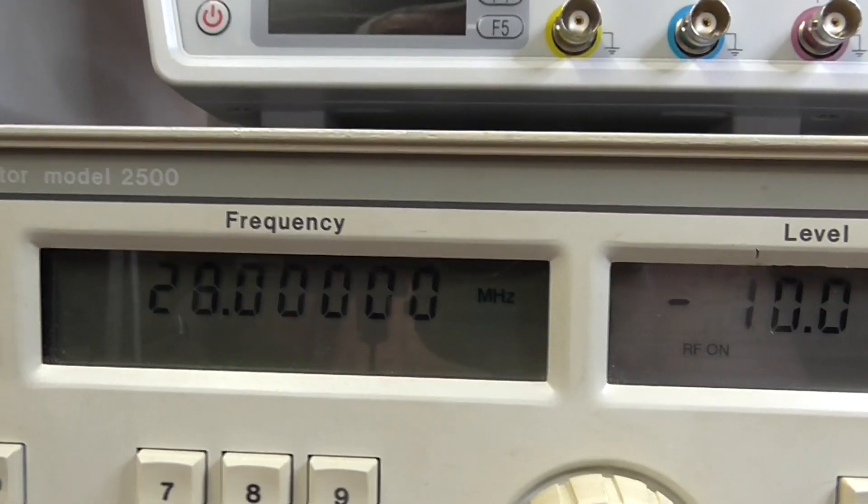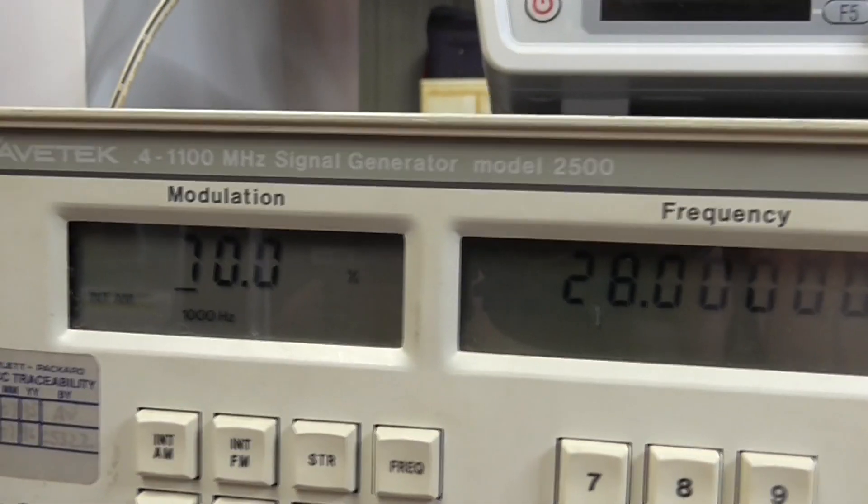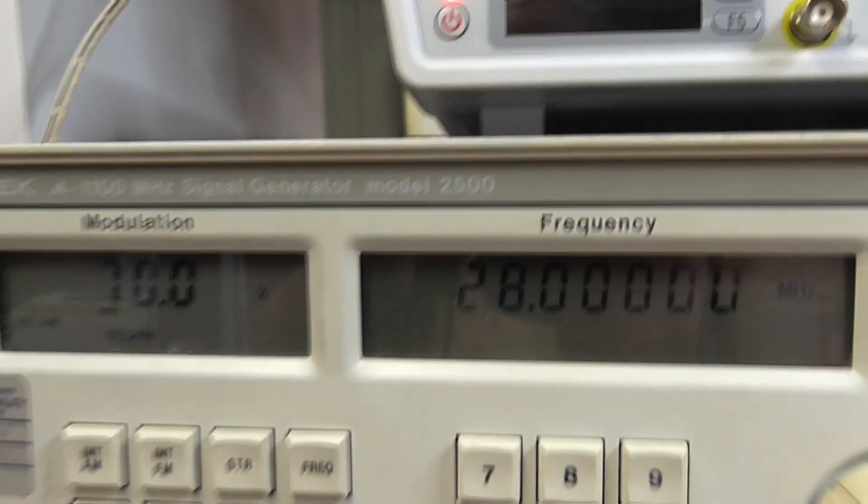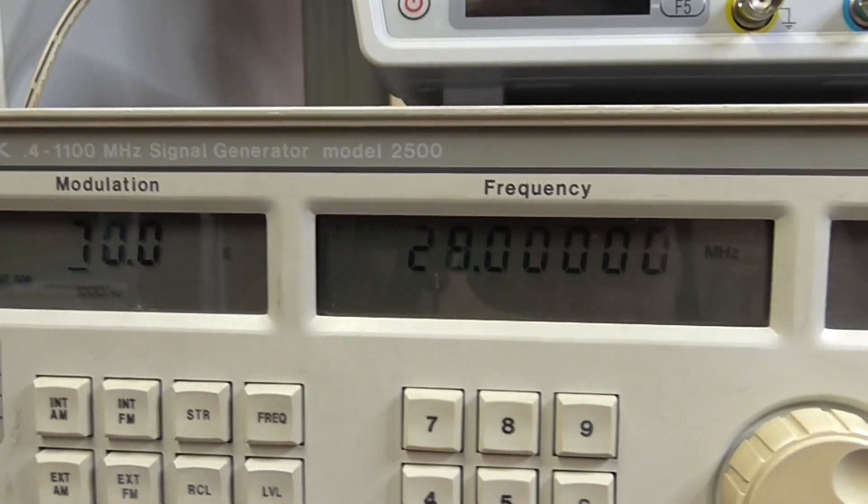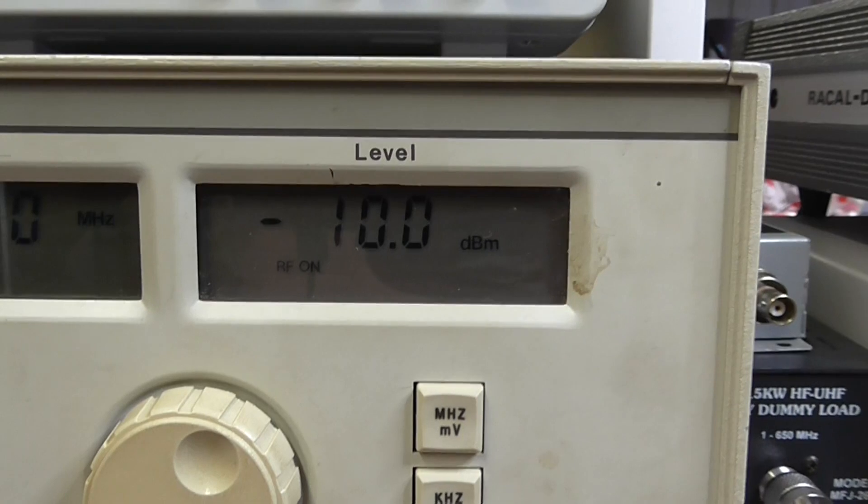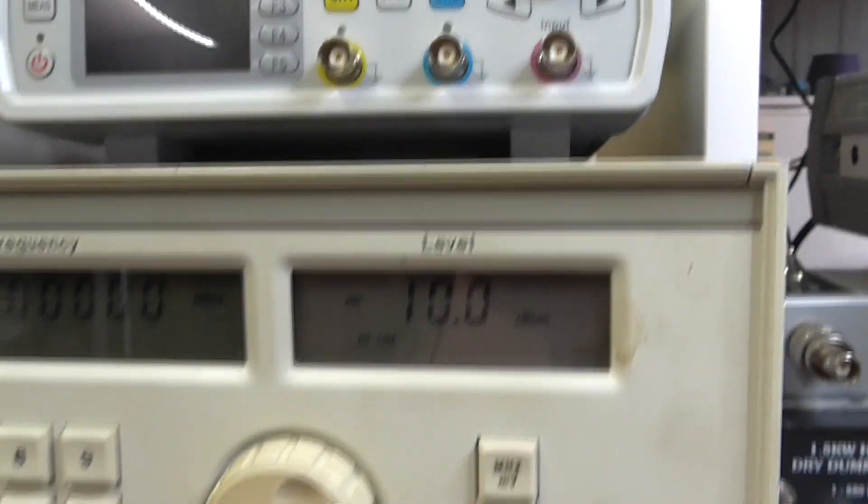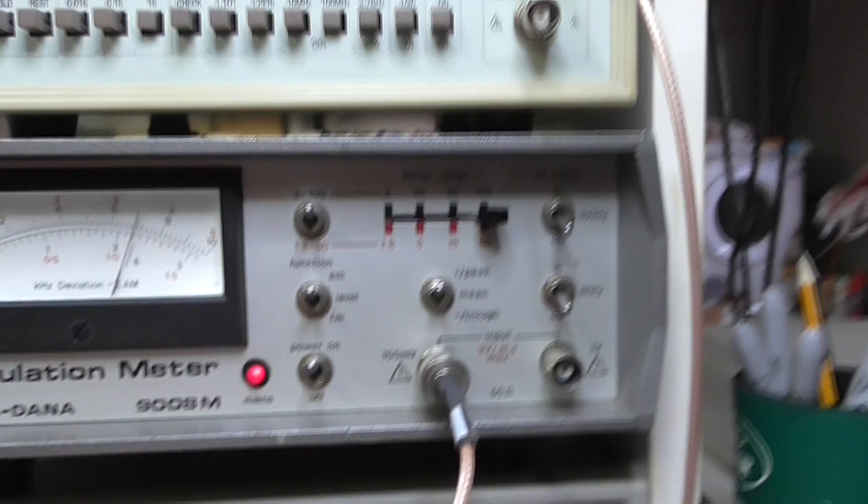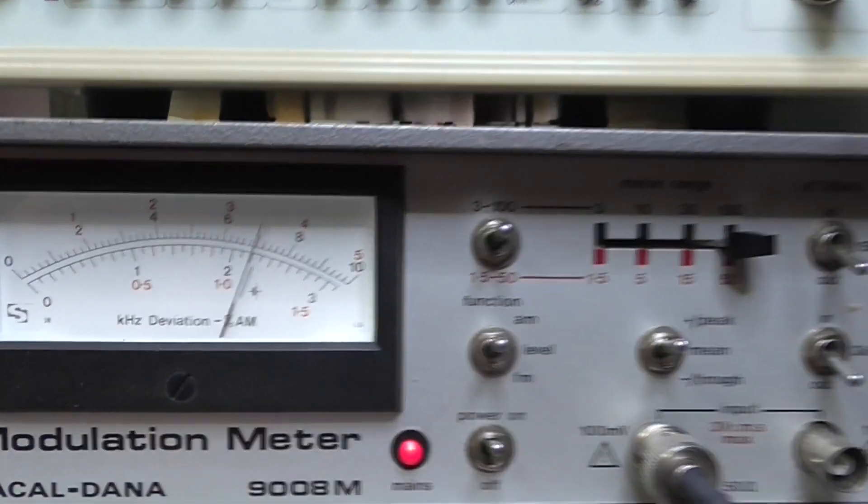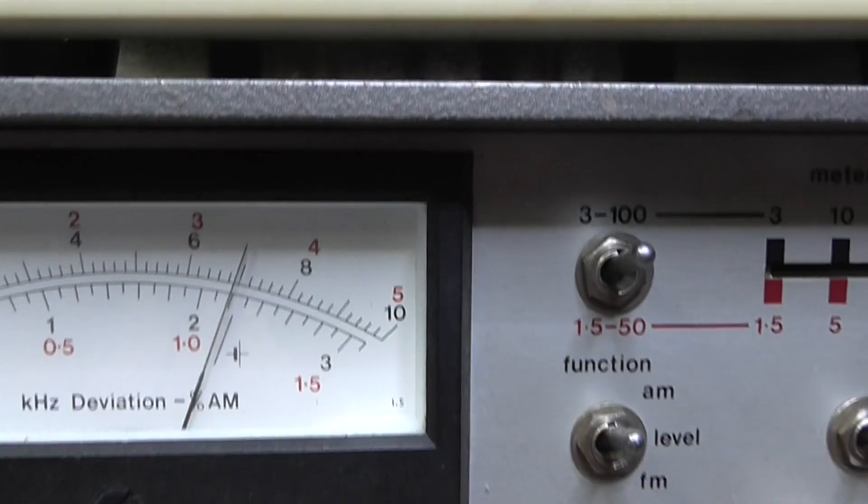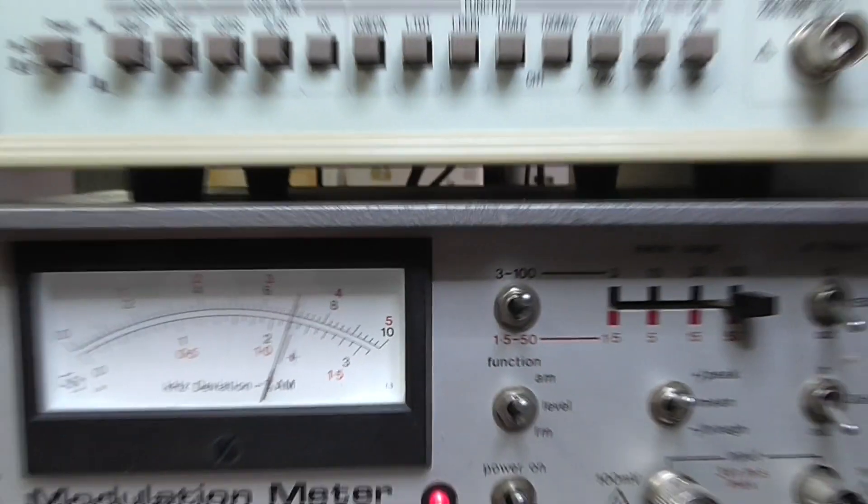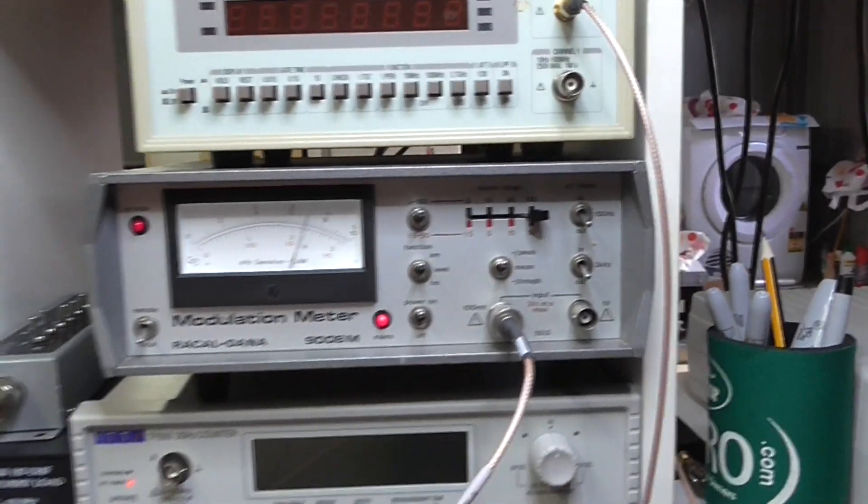We have 70% modulation on an AM signal. We're pumping out minus 10 dBm. Now that 70%, if we look over here on the modulation meter, zoom in and have a look - 70%.